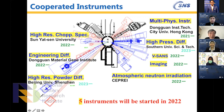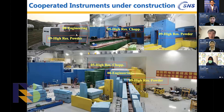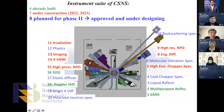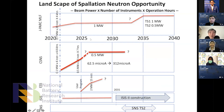New buildings are almost completed, shielding construction for beamlines is ongoing. Phase 2 instruments are already approved and under design — I am involved in helping design these new instruments. Looking at the global landscape of spallation neutron sources, mainly in Asia: J-PARC will have the highest intensity for a couple of years, and upgrades are being discussed including a second target station.